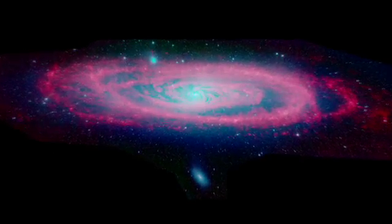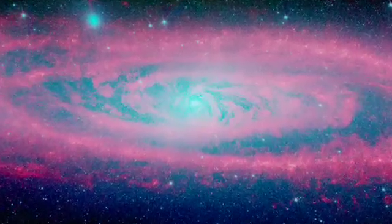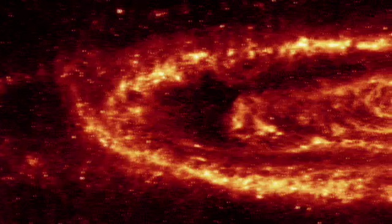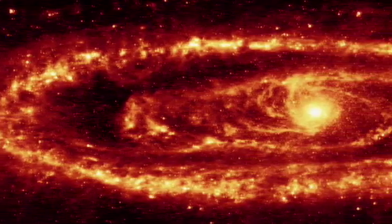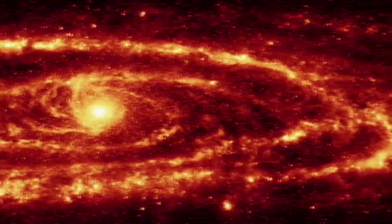Spitzer's view of Andromeda is nothing short of spectacular. In the shorter wavelengths from the IRAC instrument, we see both the stars and dust lanes in sharp detail. At longer wavelengths, seen by the MIPS detector, the starlight mostly fades, letting us study the warm dust directly.